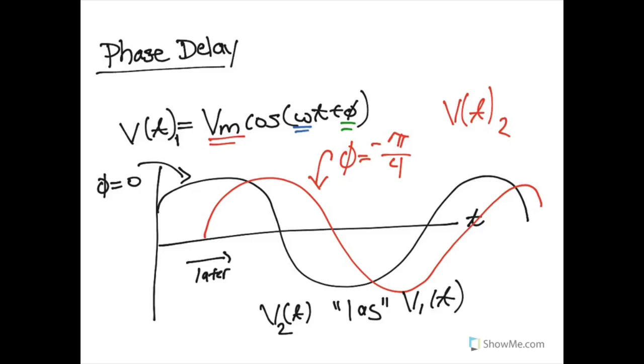and let's say that this red line is V2(t), then we will say that V2(t) will lag V1. So the red wave lags the black wave in time, because remember, our phase is always relative to time.